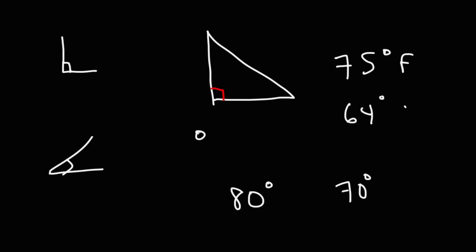If you see this symbol, it means a right angle. Think of a right triangle. You'll see this 90 degree right angle there. This means the angle is acute, or it's less than 90 degrees. And this symbol means degrees. So if you see 80 with this, that means 80 degrees, or 70 degrees. Sometimes you may see that with reference to temperature. It's 75 degrees Fahrenheit, or 64 degrees Celsius.